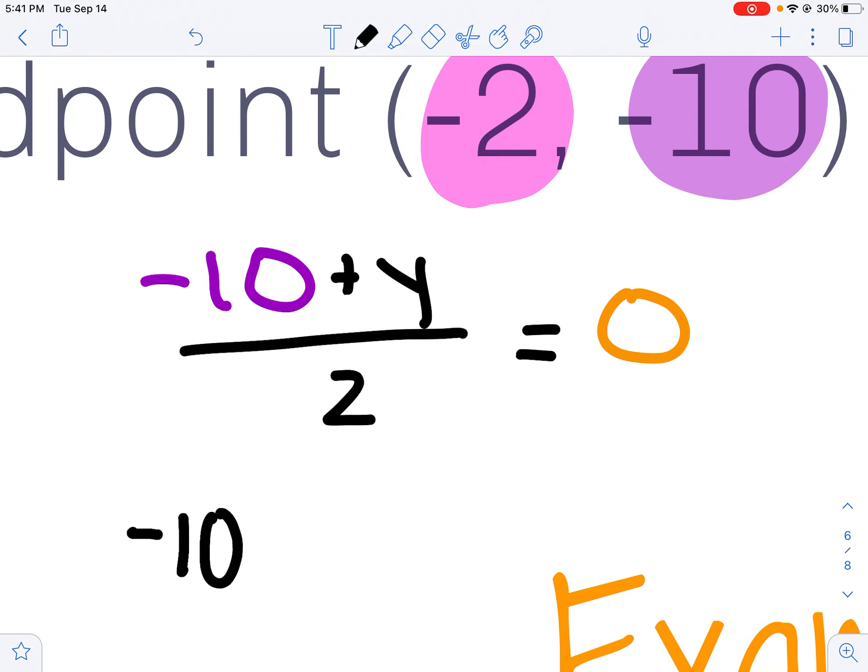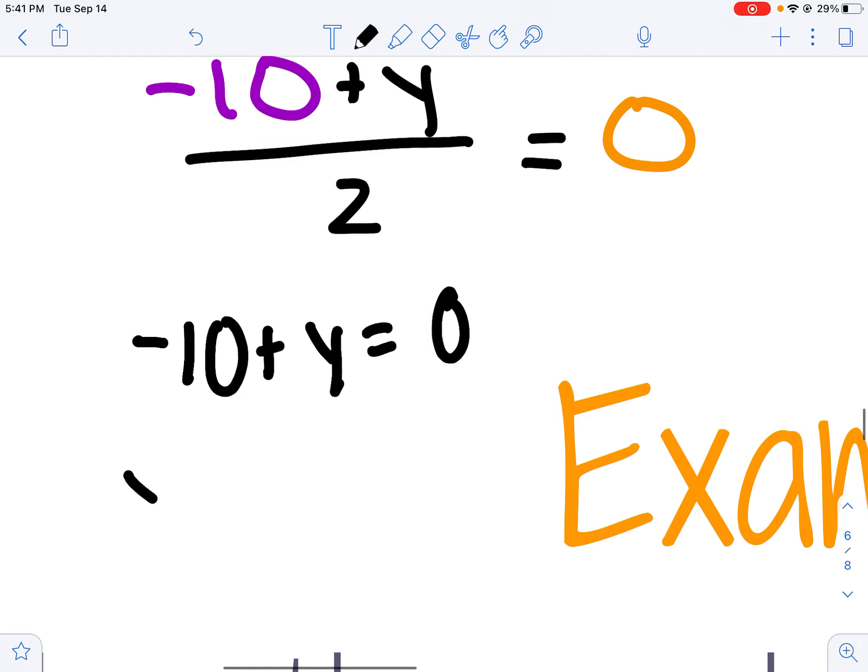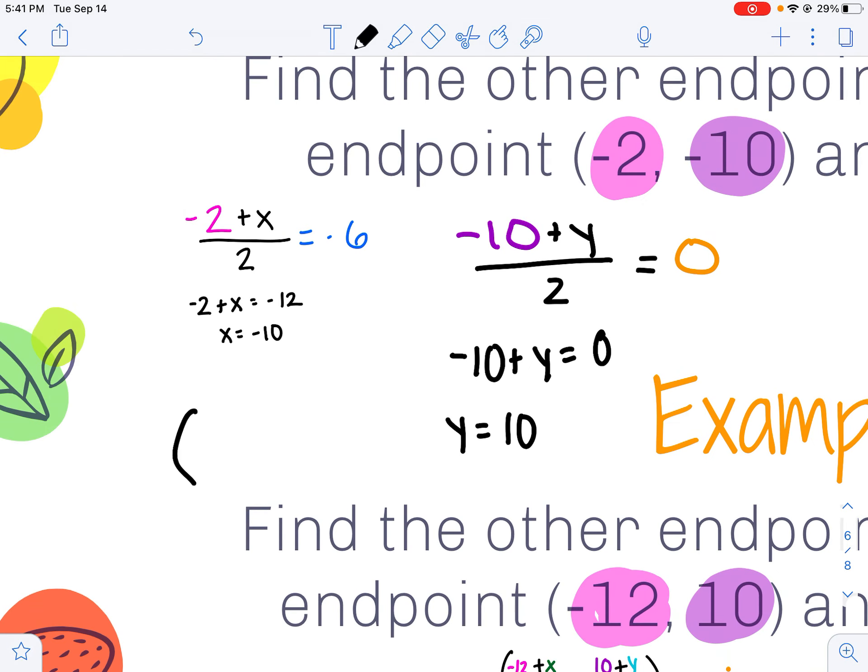I'm going to go ahead and multiply by 2 on both sides, and then add my 10 over. And I get that my ordered pair then is negative 10, 10.